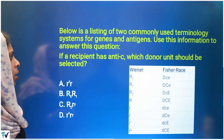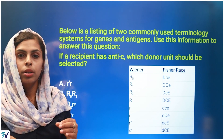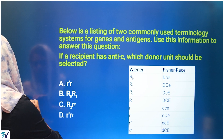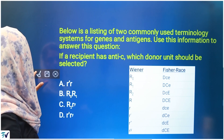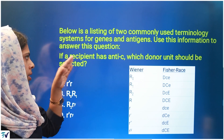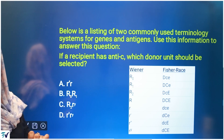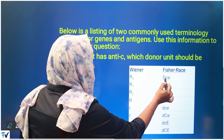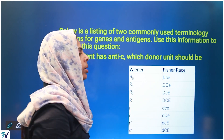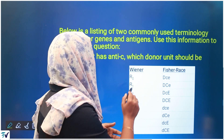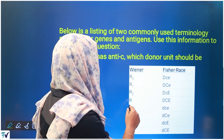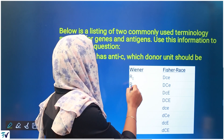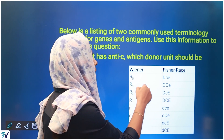If a recipient has anti-C, which donor unit should be selected? Now, looking at the nomenclature: D is RHD. Capital letters indicate RHD is present. A small letter denotes RHD is absent. R1 is DCe, R2 is DcE. We don't need to go into all the nomenclature details.